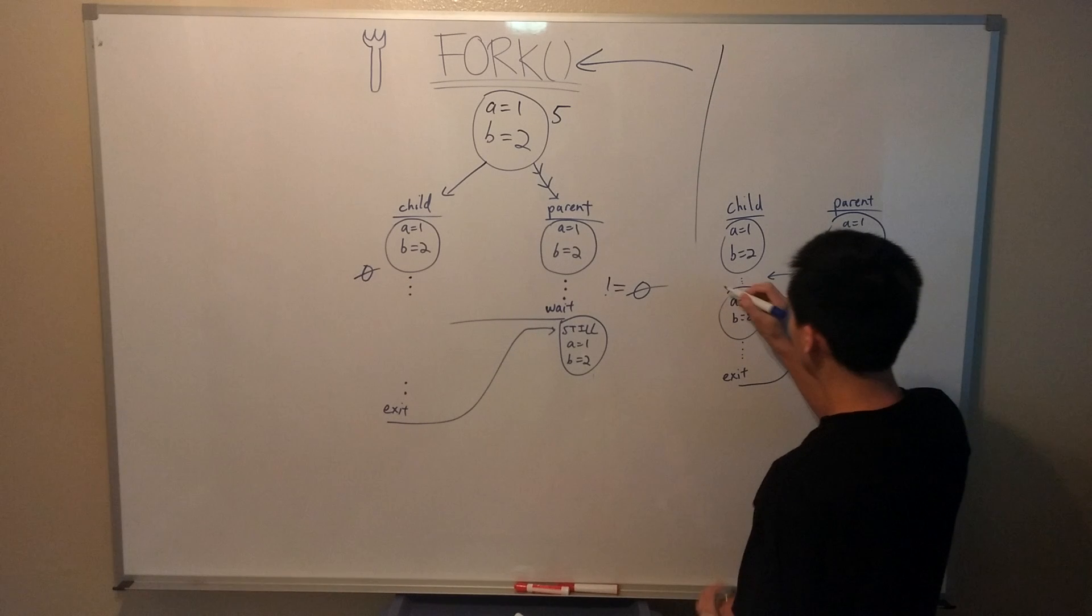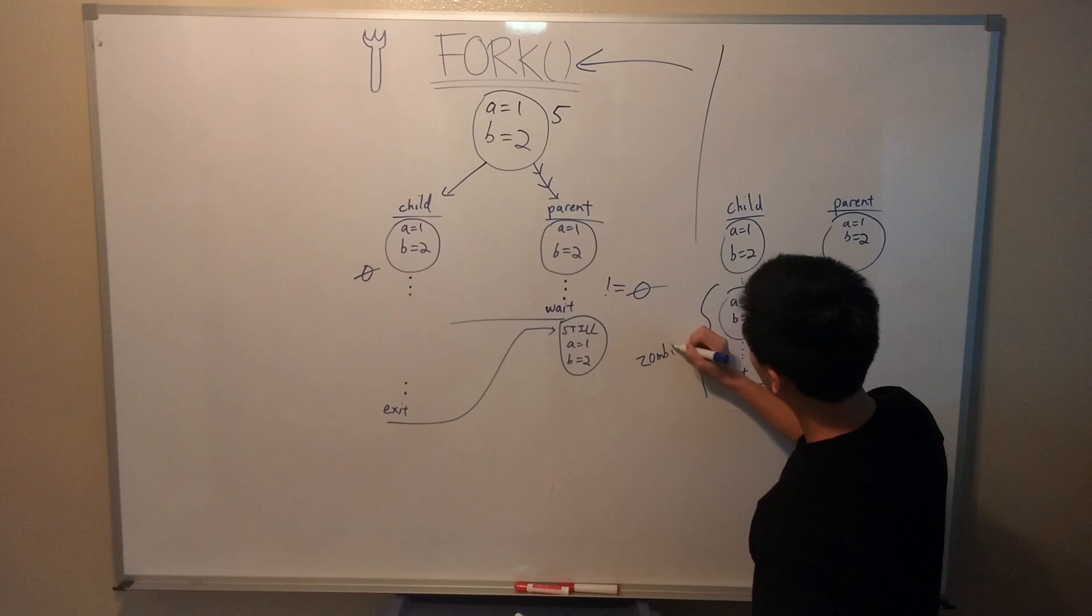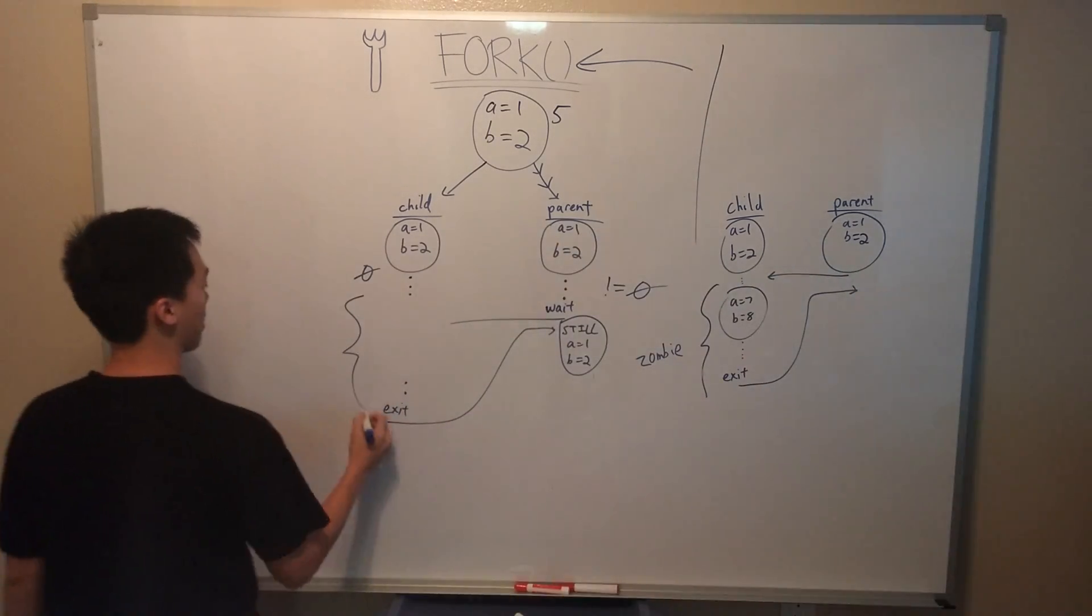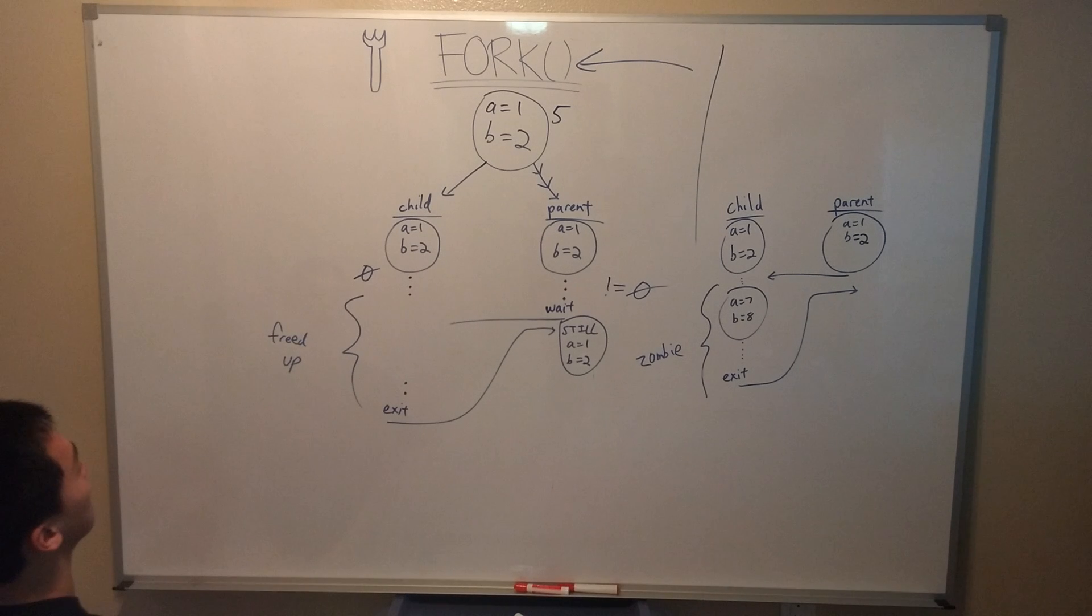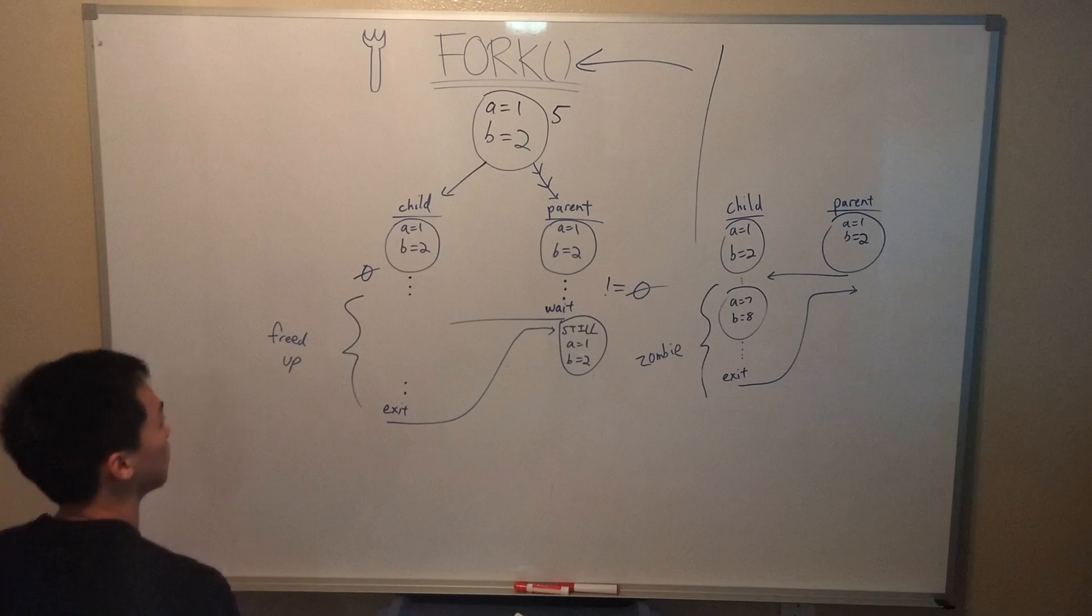If your program is small enough and you're forgetting to wait on maybe a couple children, you're not really going to notice any negligible effects. But as your program becomes larger, you might have nested waits, then the resource hogging can become more apparent. And it's just generally bad practice, so don't forget to wait, guys. And that's it.